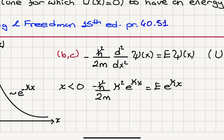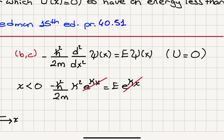The exponential terms cancel out, and we are left with the energy. The resulting energy E equals minus h-bar squared over 2m times kappa squared.